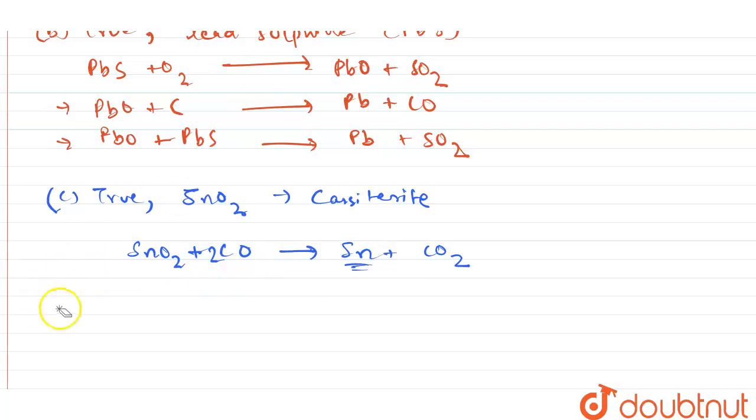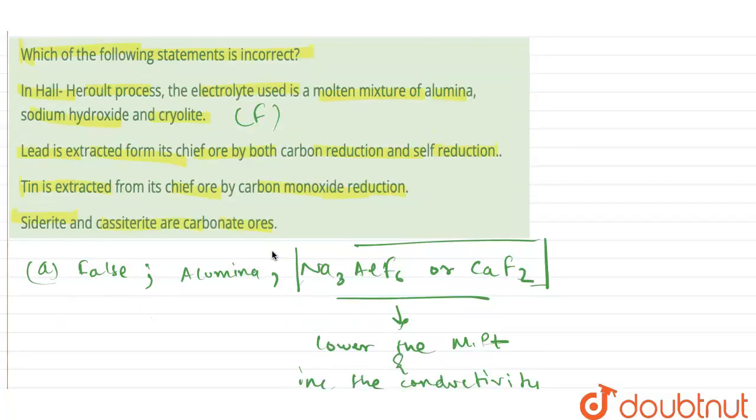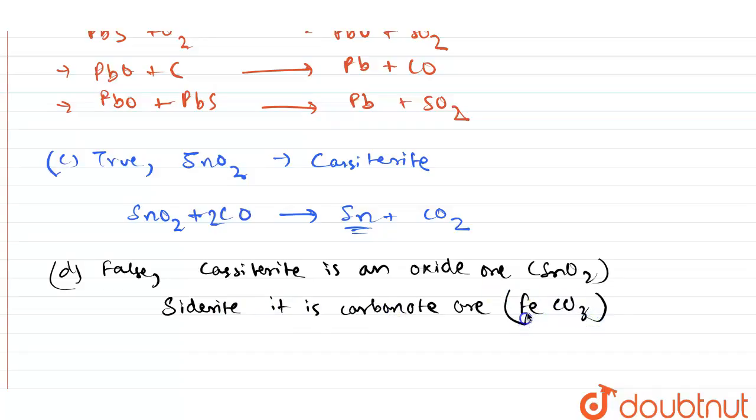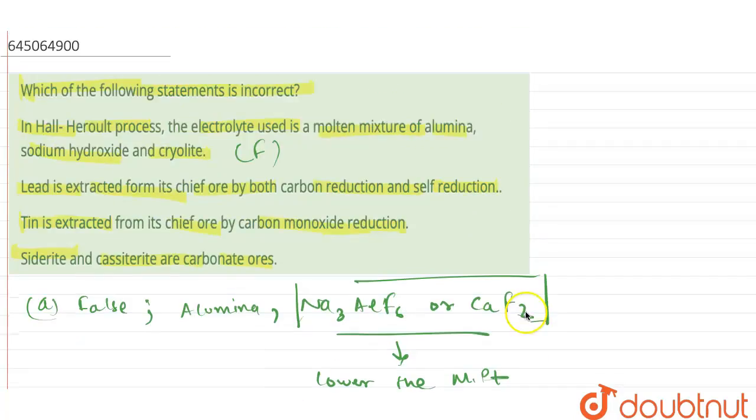The final statement: Siderite and cassiterite are carbonate ores. Is this true? No, it is not true. It is a false statement because as we have already seen, cassiterite is an oxide ore, SnO2. And the final ore that is given as siderite, it is a carbonate ore of formula FeCO3, but cassiterite is an oxide ore. Therefore, the last option is also false. So the incorrect ones are the first option and the second option.